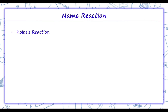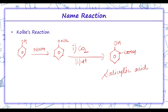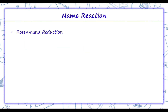Moving on to Kolbe's reaction. In Kolbe's reaction, phenol is treated with sodium hydroxide, giving sodium phenoxide, which on treatment with carbon dioxide in acidic medium results in the formation of salicylic acid, where OH and COOH groups are present.